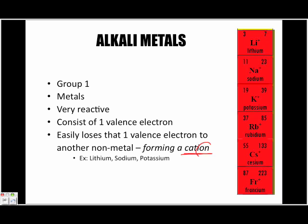An ion — which we're going to look at in one of the future chapters — refers to atoms that contain some kind of charge, either positive or negative. Because alkali metals lose an electron, cations become positively charged. A few examples are lithium, sodium, and potassium, and these are all listed on the periodic table.